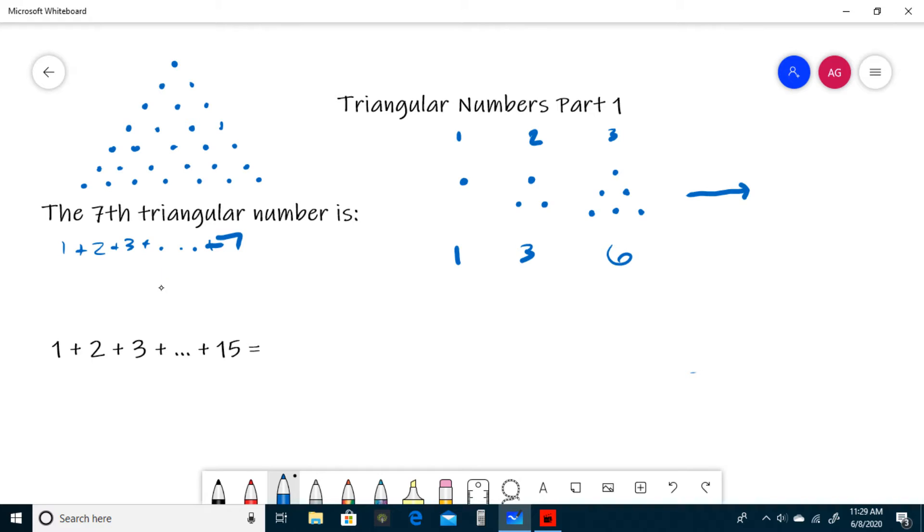So T(n), which basically means plug in n, which is the number of dots in your base or the nth triangular number—in this case n would be seven—plug it into the function T, and the triangular number is n times n plus one divided by two. So the seventh triangular number is found by just plugging seven into this formula: seven times eight divided by two. Seven times eight is 56, divided by two is 28. So the seventh triangular number is 28.